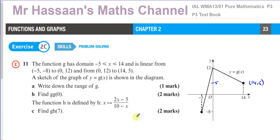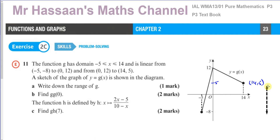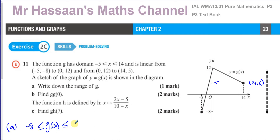Part (a): write down the range of g. The range is all values the function can take on the y-axis. The lowest output is -8 and the highest is 12, since the domain is limited to [-5, 14]. So the range of g is -8 ≤ g(x) ≤ 12.